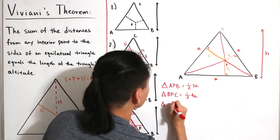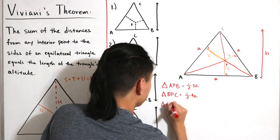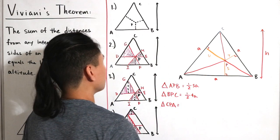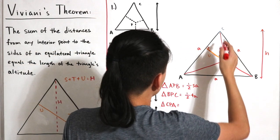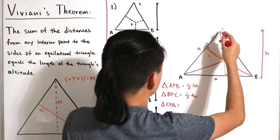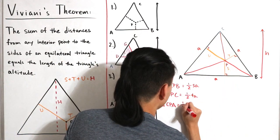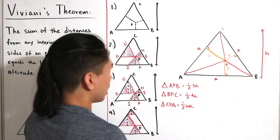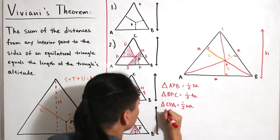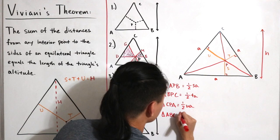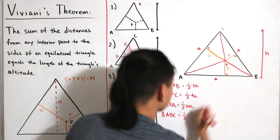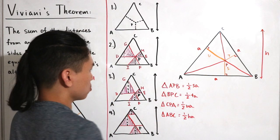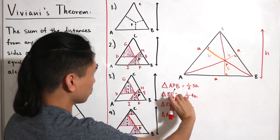The area of triangle CPA equals one-half times height u times a. And the area of the full triangle ABC equals one-half times base a times height h.